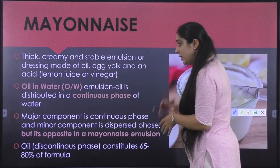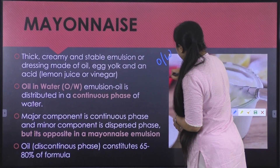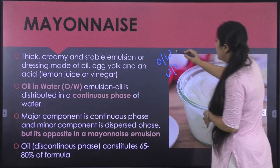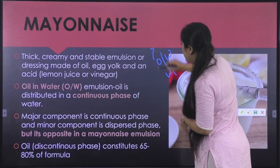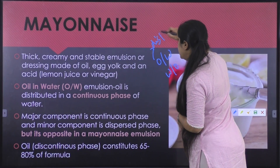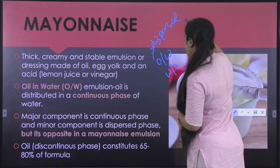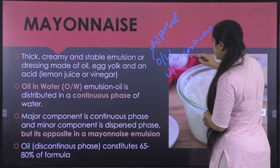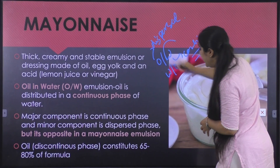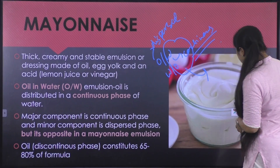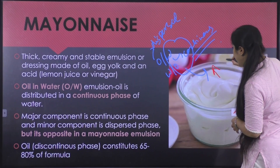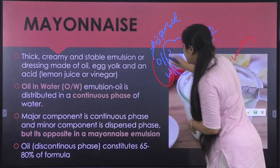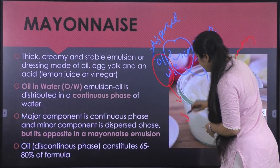When we talk about emulsions, we have two types: oil-in-water and water-in-oil. Whatever is the first phase we write is the dispersed phase and the second phase is the continuous phase. The continuous phase is greater in quantity, whereas the dispersed phase is present in much lesser quantity.